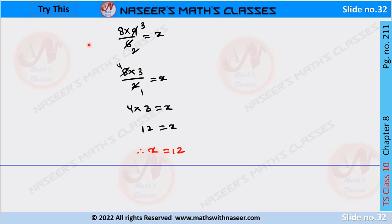After cross multiplication, we can write 8 into 9 by 6 is equal to x. We cancel 3 twos are 6, 3 threes are 9. It can be written as 8 into 3 by 2 is equal to x. We cancel 2 ones are 2, 2 fours are 8. It can be written as 4 into 3 is equal to x. So 4 threes are 12, therefore we get x is equal to 12.